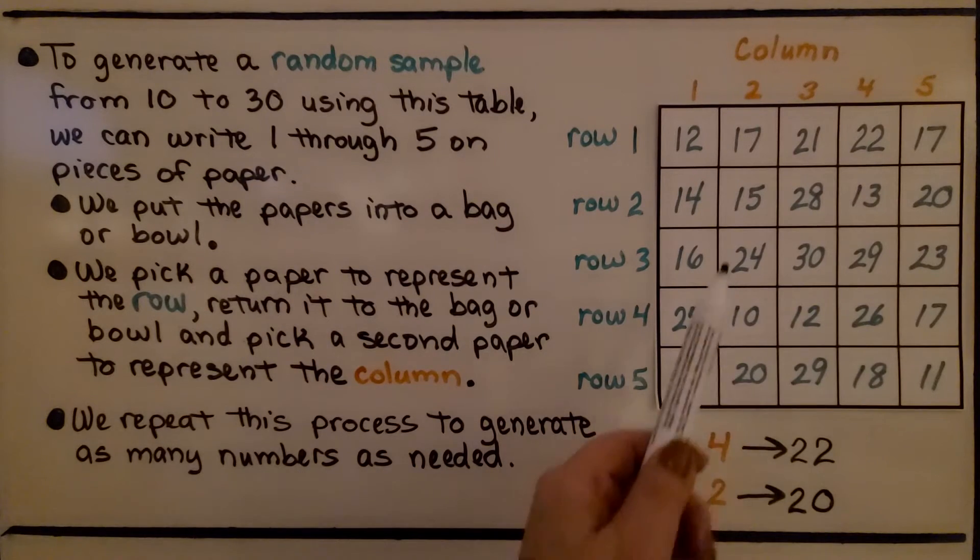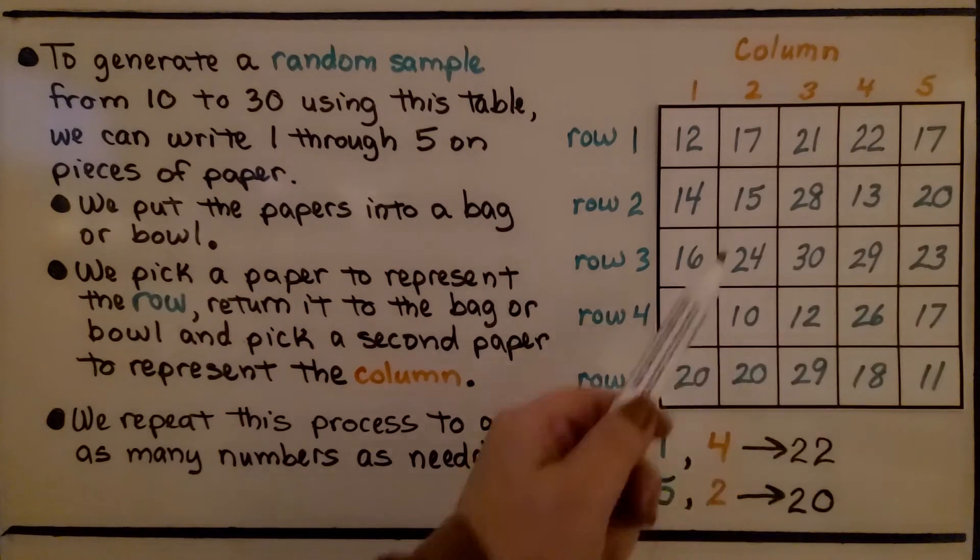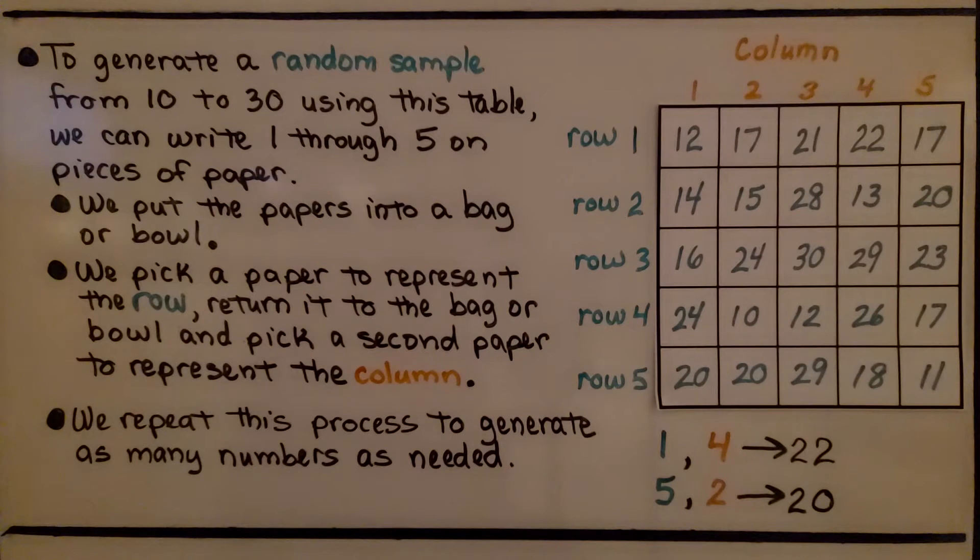Here we have a grid, a table with some numbers written on it. If we needed to generate a random sample from the number 10 to 30 using this table, we can write one through five on pieces of paper, put the papers into a bag or bowl, and pick a paper to represent the row, return it to the bag or bowl, and pick a second paper to represent the column.